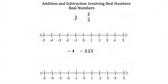So here we have 2, and we would plot that on our number line right here. 2 thirds, even though it's a fraction, still goes on our number line. Here we have negative 4, and even though it's negative, it's still a real number. Then we have the decimal negative 3.23 — it still goes on the number line even though it's negative and a decimal.